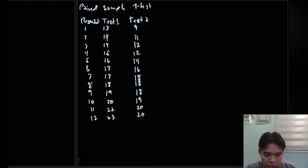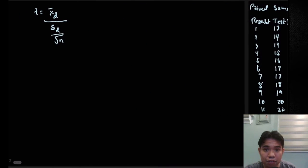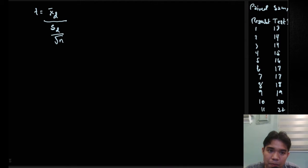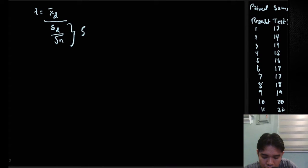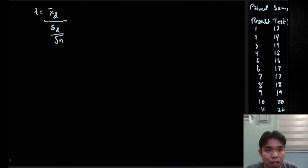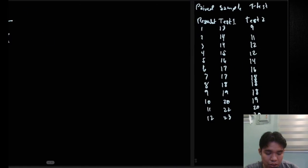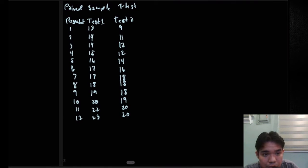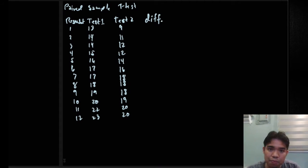We have a formula for the t-test of paired samples. It uses the mean of the difference in the numerator. That means we need the difference of the data first before we can get the mean. The denominator is the standard error, which is standard deviation divided by the square root of n — but specifically the standard deviation of the difference, not of the raw data. The mean also comes from the difference column.